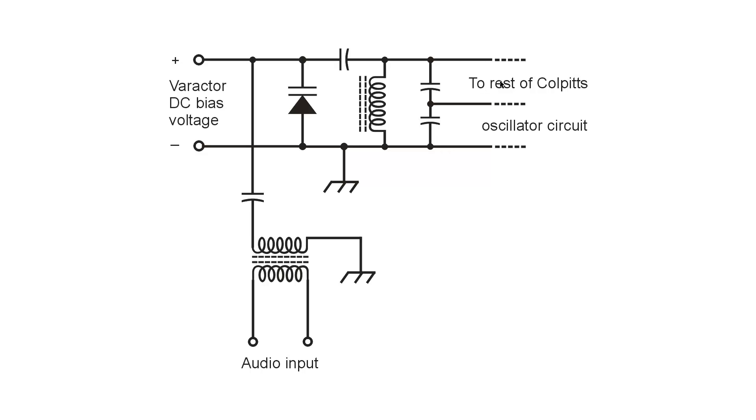When you hook up a varactor diode in this fashion to the tank circuit of a Colpitts or any other type of variable frequency oscillator, you will get frequency modulation of the signal.